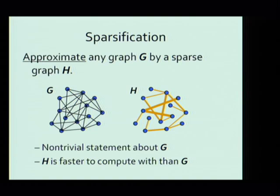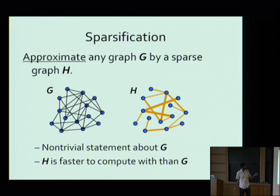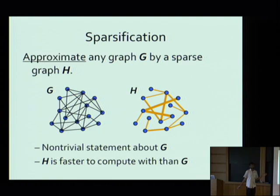Let me begin by defining the problem. The objective of sparsification is to approximate any given graph G by a sparse graph H for some natural or useful notion of approximation. You're given a graph G on n vertices, an undirected graph with up to n-squared edges, and you'd like to find a sparse graph H on the same set of vertices with a small number of edges — ideally order n, order n log n edges — so that H is close to G in some rigorous, well-defined way.